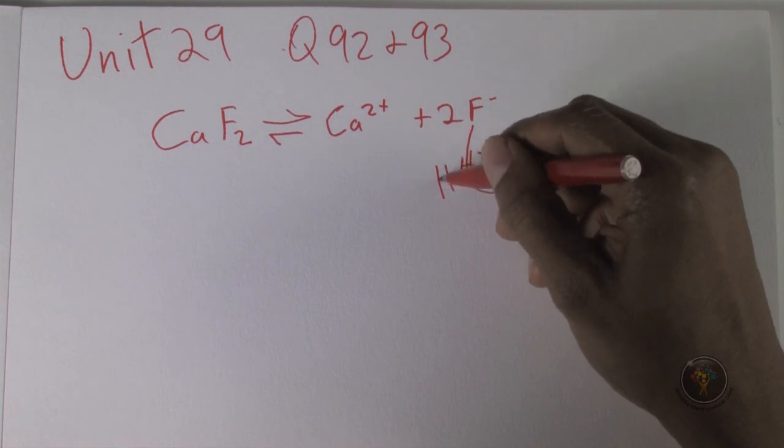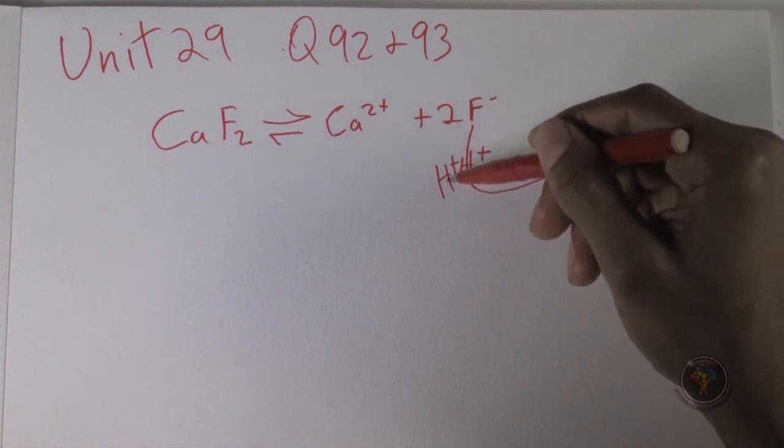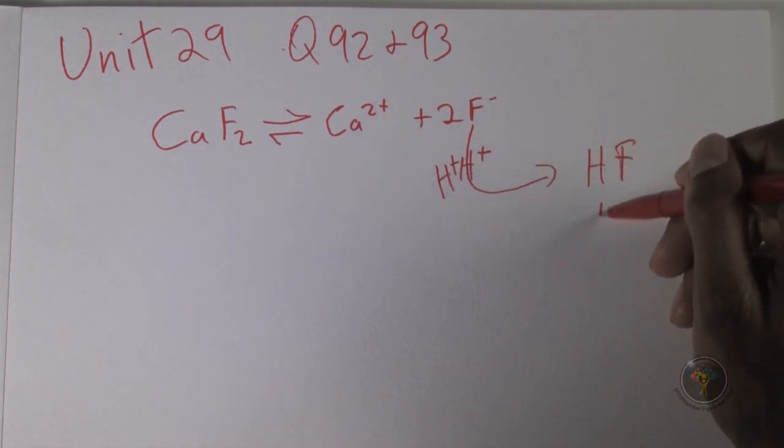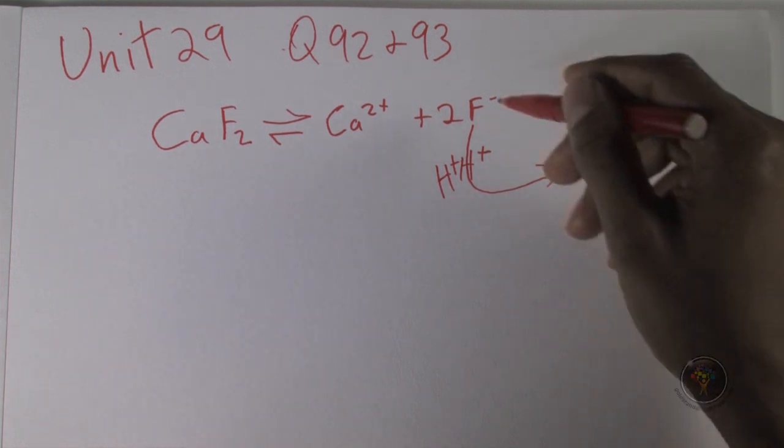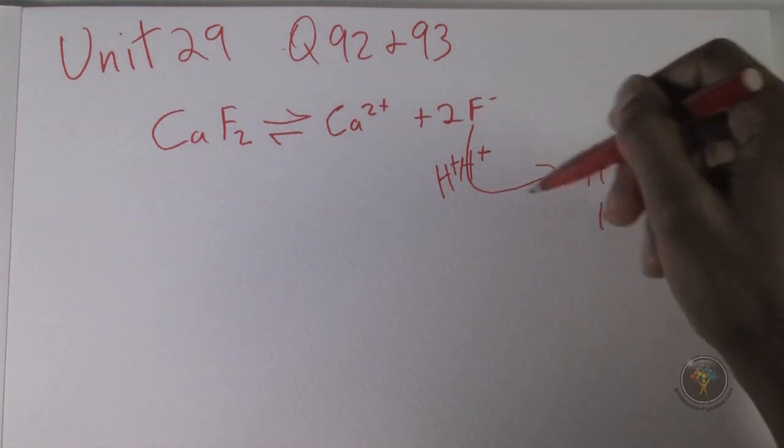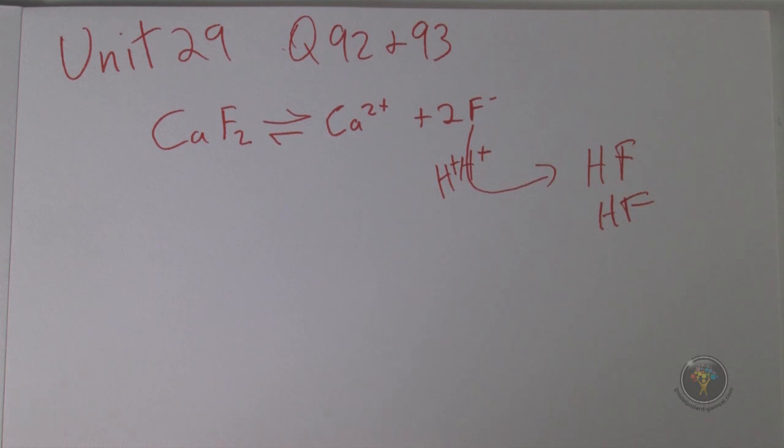If we keep adding acid, it will keep taking fluorine away and making HF. The more we remove fluorine, this is the classic example of Le Chatelier's principle. If a chemical reaction is at equilibrium and stress is applied, the reaction will shift to relieve the stress.